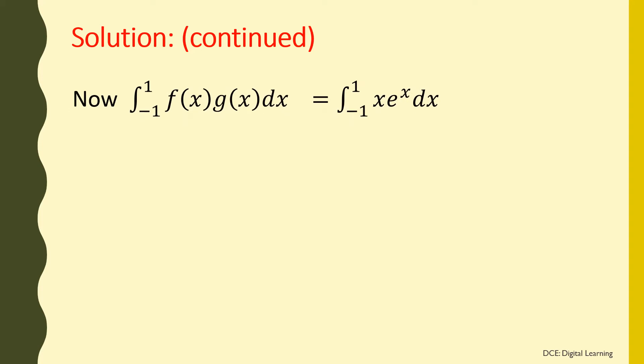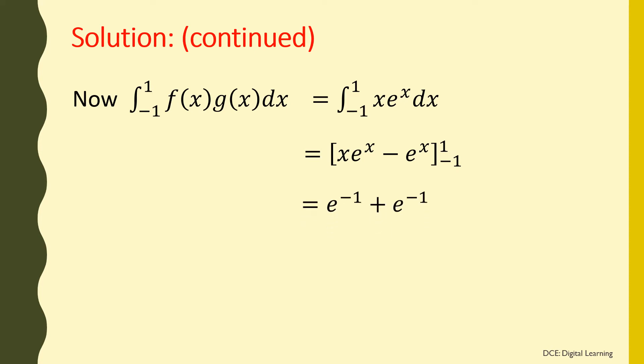Now, the integral of f(x)g(x) dx from -1 to 1 equals the integral of x·e^x dx from -1 to 1. Integrating by parts, this equals [x·e^x - e^x] from -1 to 1. Applying the limits gives e^(-1) + e^(-1), which equals 1/e + 1/e = 2/e.